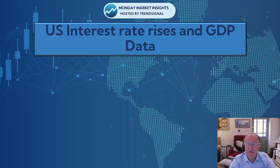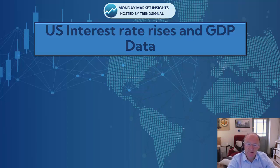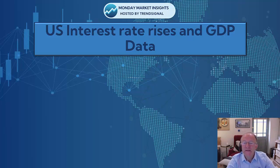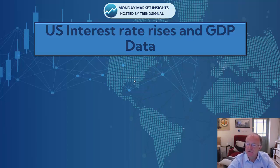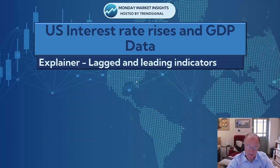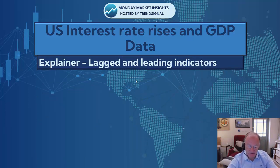We've got the Fed meeting this week, and also GDP data. Economists tend to talk about indicators or data releases as either being lagging or leading, and it's quite relevant to what's happening this week. The big question I want to pose at the start of this discussion is: what's the difference really between lagged and leading indicators, and how they affect what we do?